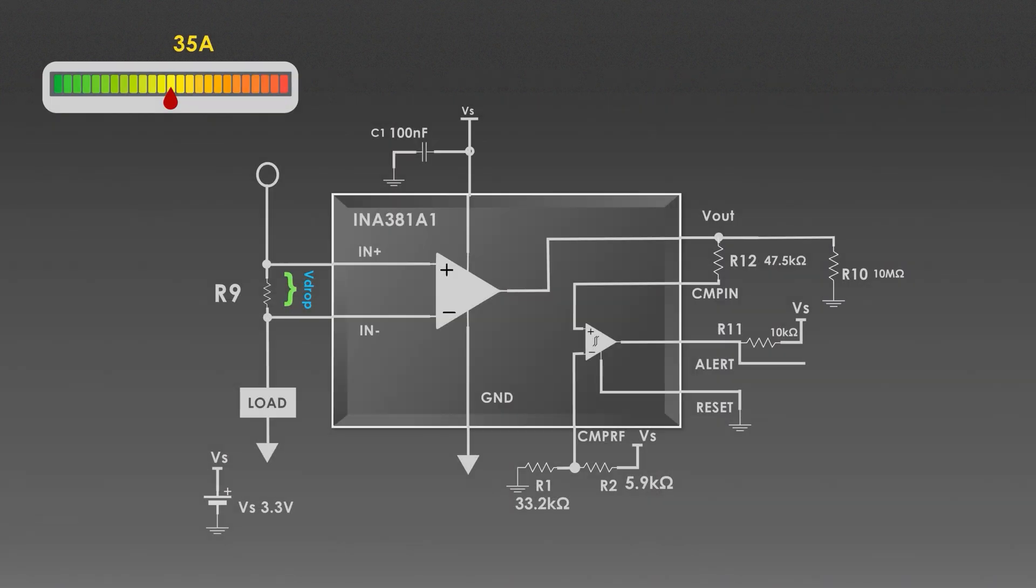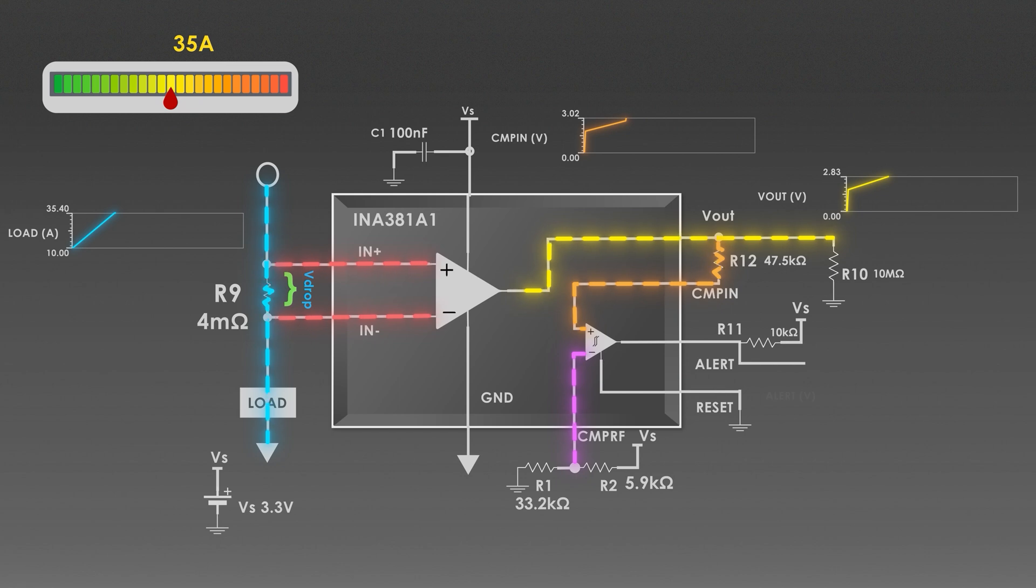The load current is flowing through the current sense amplifier and increases. Simultaneously, the output voltage of the amplifier is also increasing as per the current. The alert pin is pulled high. The comparator input pin is also following the output voltage.